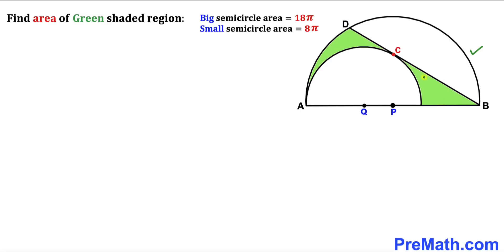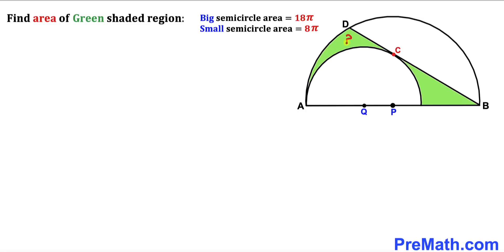In this video we have got two semicircles put together, such that chord BD is tangent to the smaller semicircle at point C. The area of the big semicircle is 18π with center P, whereas the area of the smaller semicircle is 8π with its center at Q. Our task is to calculate the area of the green shaded region — these two areas combined.